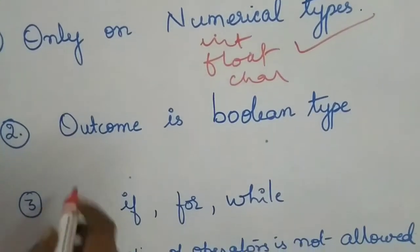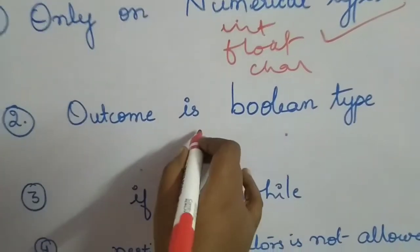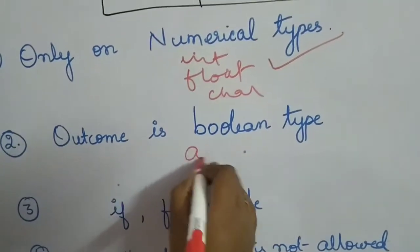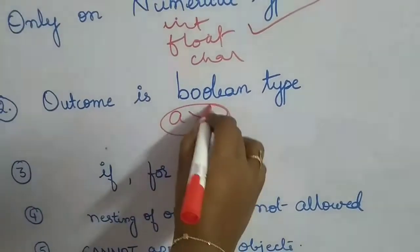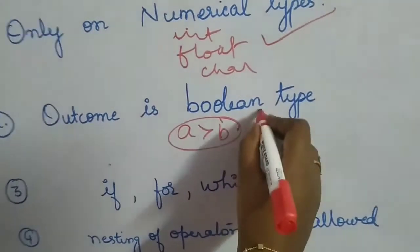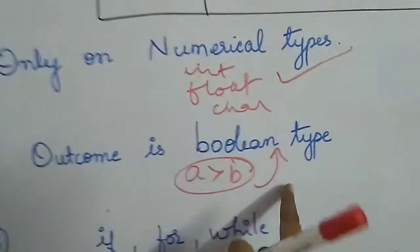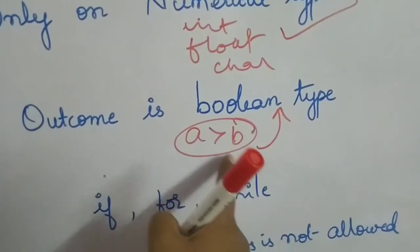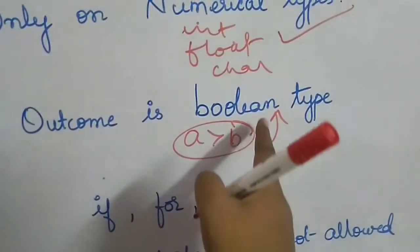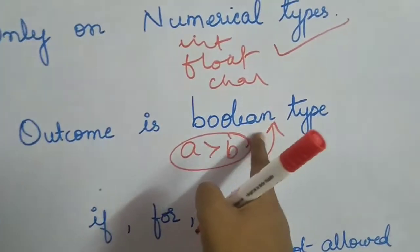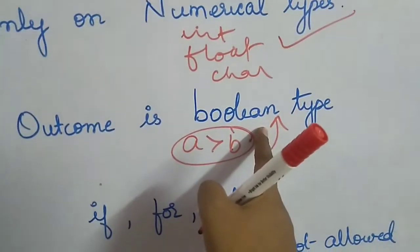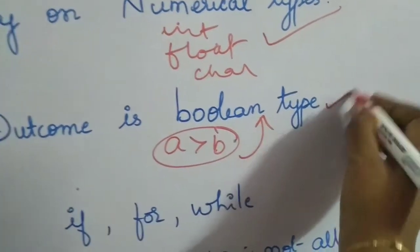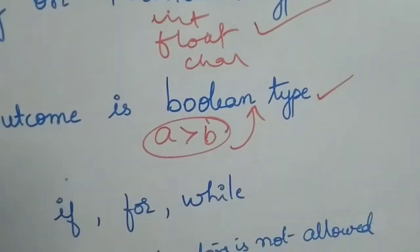The next rule is regarding the outcome of this operation. Say I am checking if a is greater than b or whatever — the outcome is a boolean type. If a is greater than b and this is true, then the result will be of boolean type, because boolean only holds true or false. So the outcome will always be of boolean type.